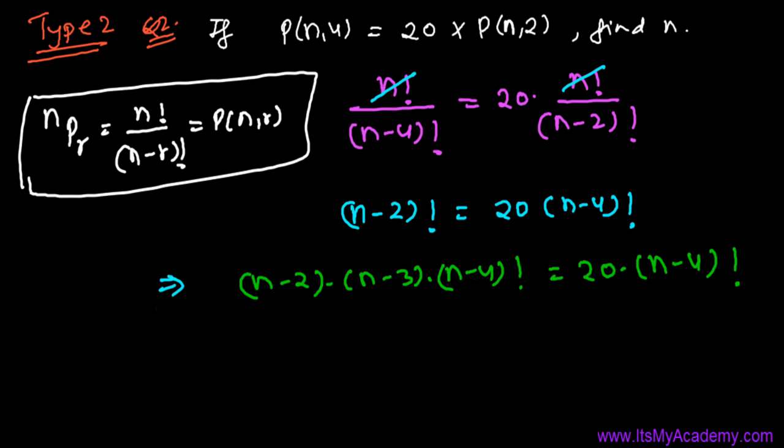Now we can cancel (n-4)! on both sides. So we get (n-2) times (n-3) equals 20.